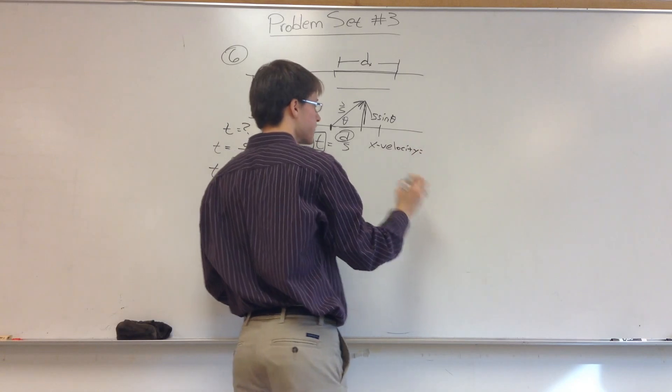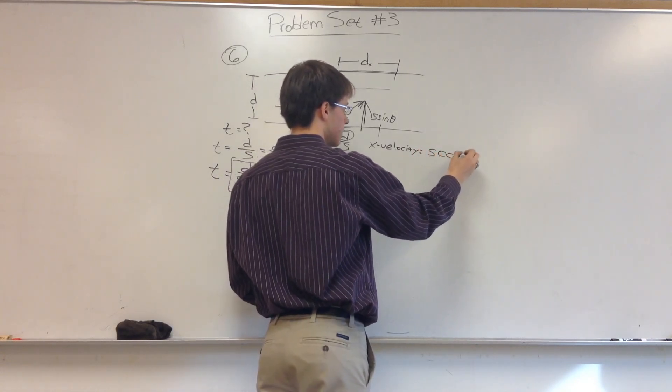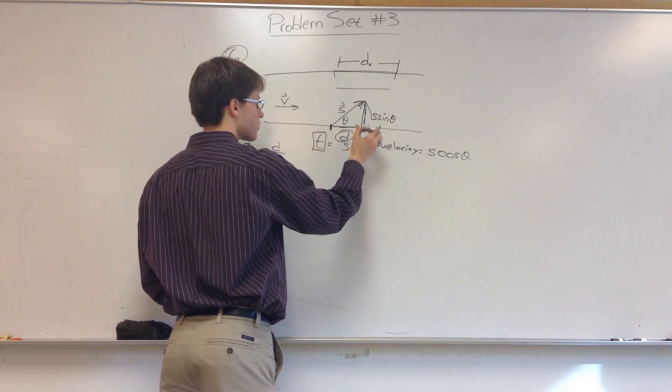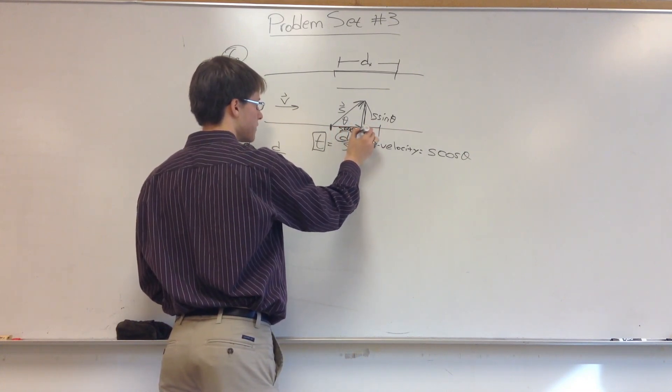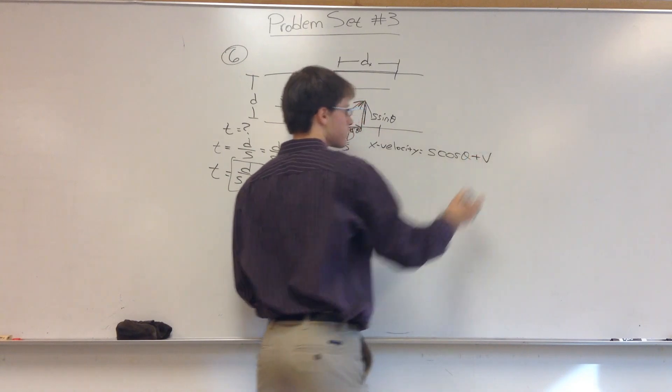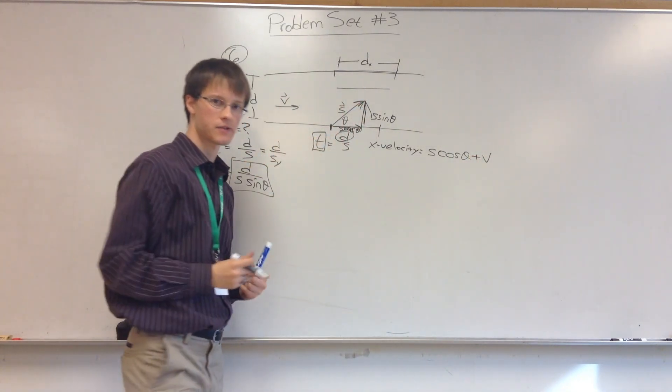S times cosine of theta, plus the velocity of the river that is adding to his X velocity.